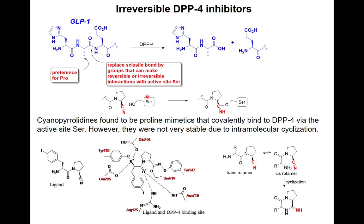The serine OH attacks the CN group and makes a covalent bond, making this an irreversible inhibitor of DPP-4. This was confirmed by X-ray crystal structures of the drug soaked into the enzyme. The structures show the drug making reversible non-covalent interactions with residues such as glutamate and tyrosine in the active site, while the cyano group is gone — replaced by a covalent adduct with the active site serine, further stabilized by binding to the active site tyrosine.